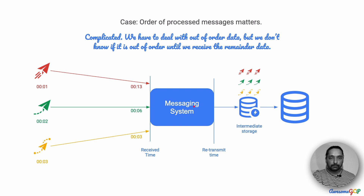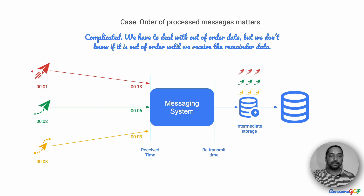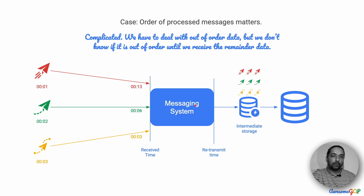Then there is a case where the order of the processed messages matters. This is very complicated because if the order in which we process the messages matters, it is dependent on when we receive them. Possibly they were sent in order — first red, then green, then yellow — but because of network latencies, they come in the reverse order. When we process them, we are not sure if all the data is currently available.